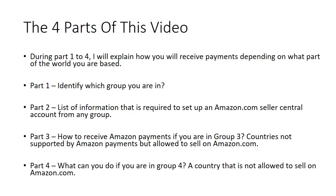There are 4 parts to this video. During parts 1 to 4, I explain exactly how you receive payments depending on what part of the world you are based. Part 1: identify which group you are in. Part 2: the information required to set up an Amazon.com Seller Central account. Part 3: how to receive Amazon Payments if you are in Group 3. Part 4: what you can do if you are in Group 4. No matter where you are based, you are able to sell on Amazon.com, but you will have a different route depending on which group you are in.